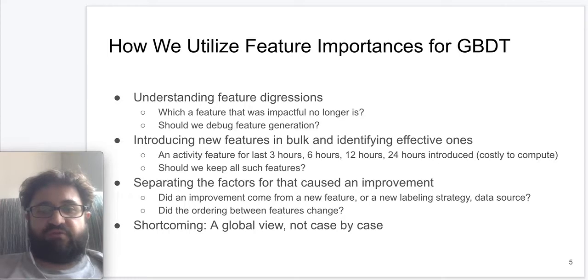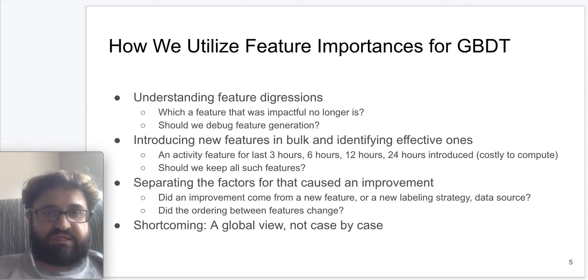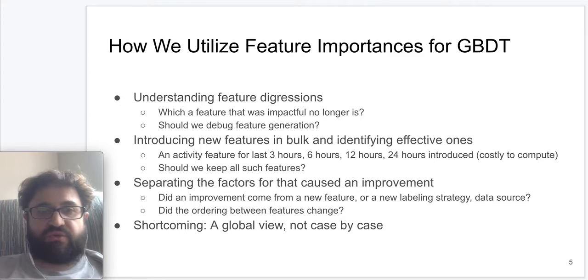Furthermore, we utilize these importance values to select and potentially eliminate features if we are introducing them to the model in bulk. For example, if we have a very costly feature that is not utilized by the model as given by the feature importances, we might actually decide to completely remove that feature from being even generated online. Finally, feature importance values can help separate the factors that cause an improvement in modeling. For example, we could understand whether a metric lift is coming from the feature, a new data source, or labeling strategy.